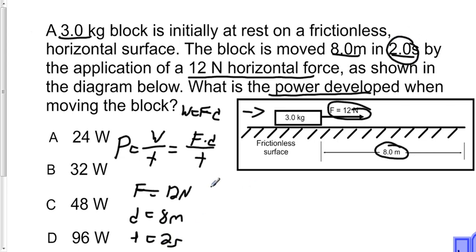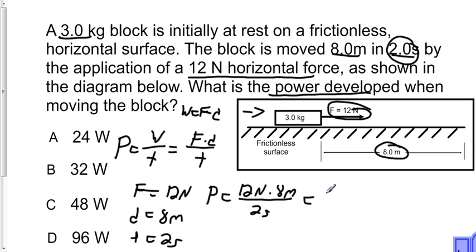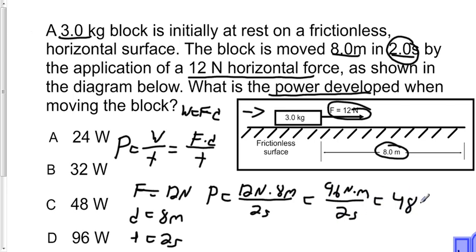As a result, we can rewrite the power equation to power equals 12 Newtons times 8 meters over 2 seconds. This gives us 96 Newton-meters over 2 seconds, which is equal to 48 watts. This is answer C.